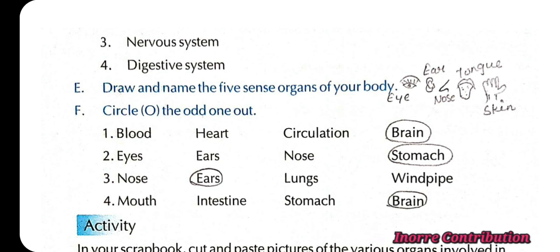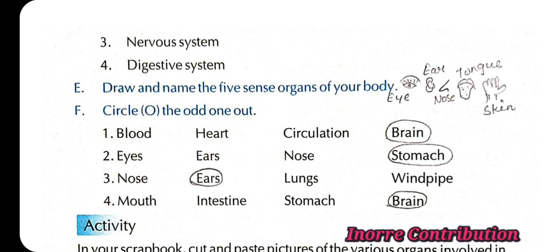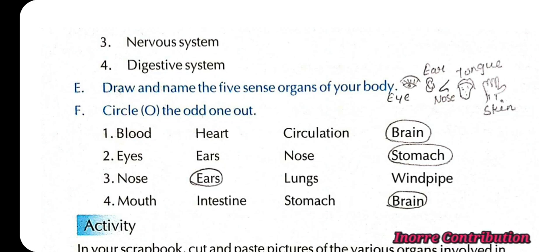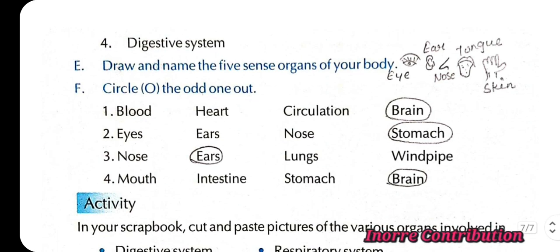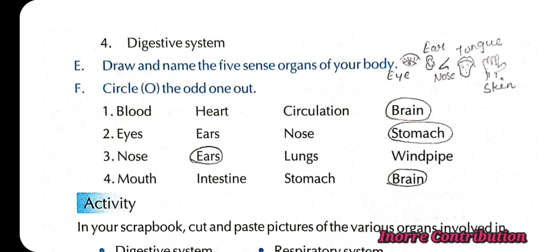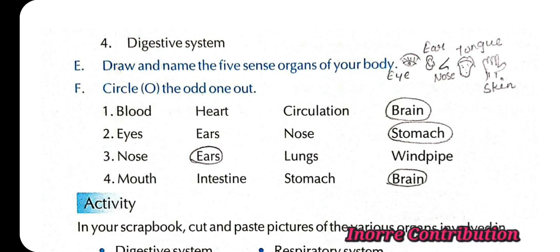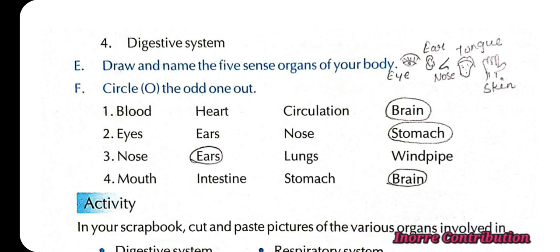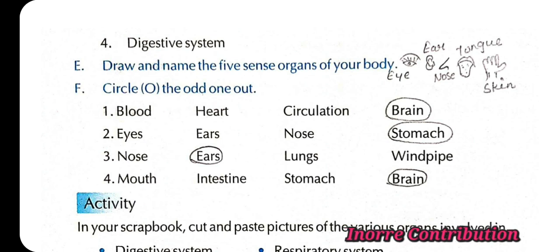Draw and name the five sense organs of your body. Circle the odd one out: for the first, the answer will be brain; second, stomach; third, ear; and for the fourth one, the answer is brain.